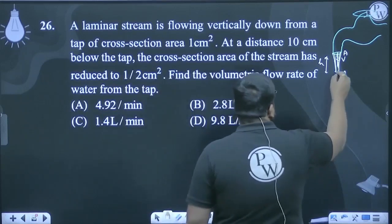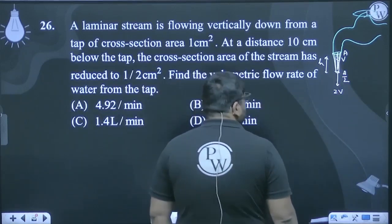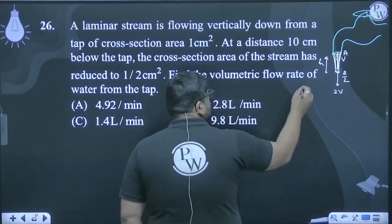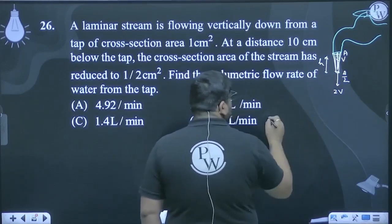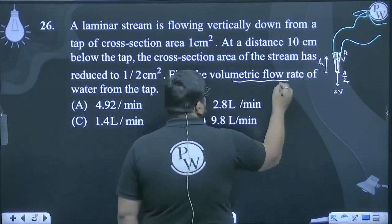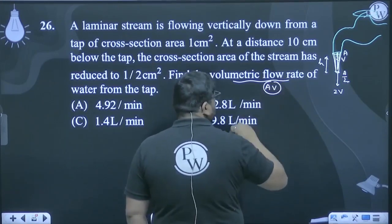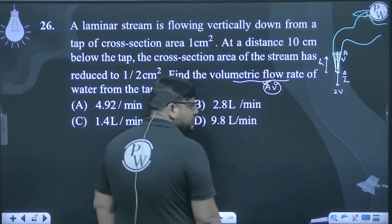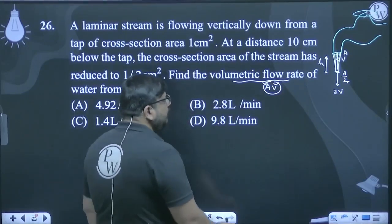Now if I apply Bernoulli's theorem between these two points, I'll get this equation. The fluid coming out from here - basically we need v. What is volume flow rate? Volume flow rate means I need to find A into v. A is given, v needs to be found.